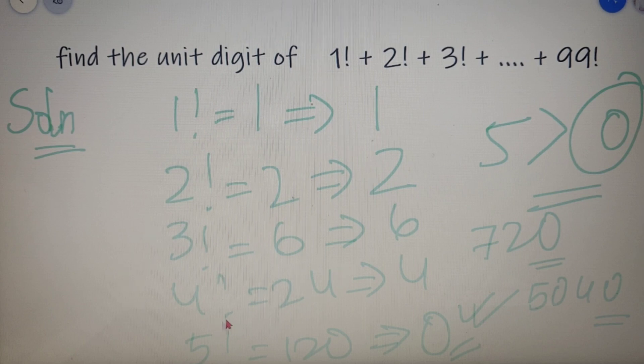So in conclusion, I can say that factorials of all the numbers which are greater than 5 will always end in 0.